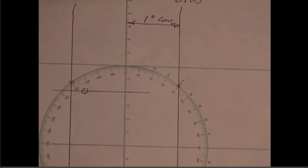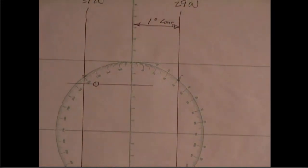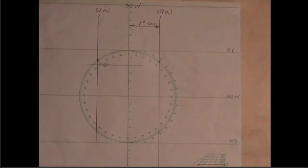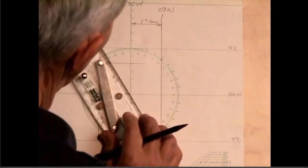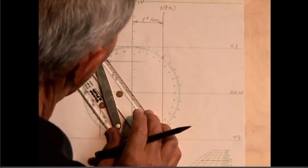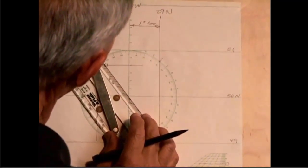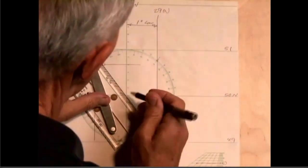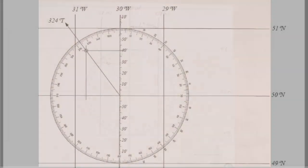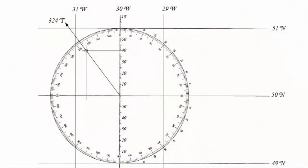And the question was determine the bearing to this point from the center of the compass rose. So I'm going to draw a line from the center of the compass rose through there. 324 is the bearing of this line. 324 degrees true.